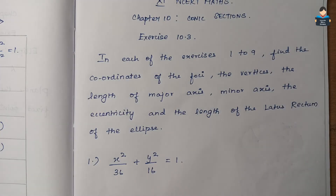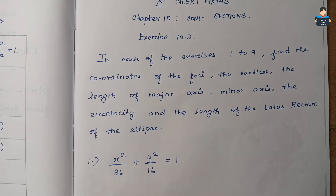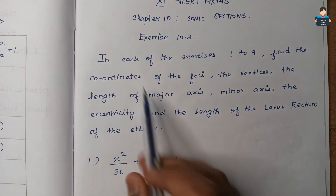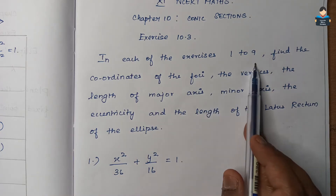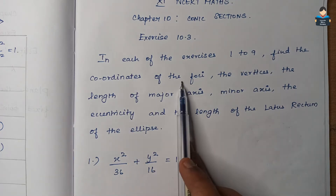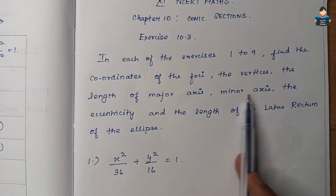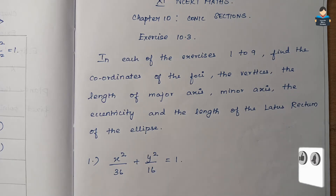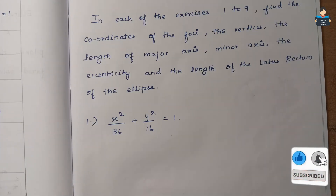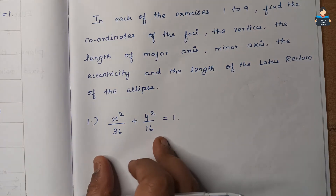Hello everyone, welcome to our channel. In this video, we cover 11th standard NCERT Maths Chapter 10, Conic Sections, Exercise 10.3. In each of exercises 1 to 9, we find the coordinates of the foci, vertices, length of major axis, minor axis, eccentricity, and length of the latus rectum of the ellipse.